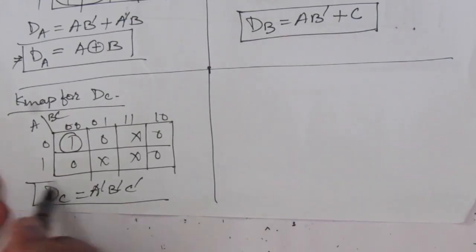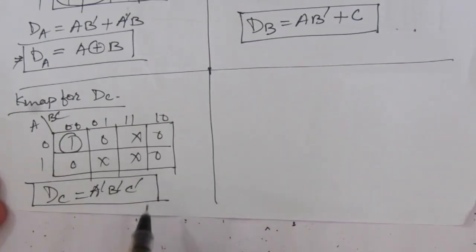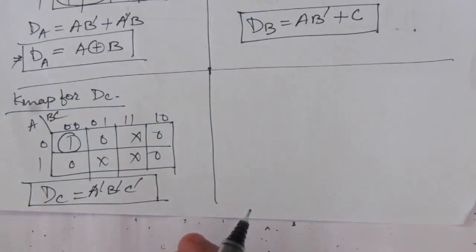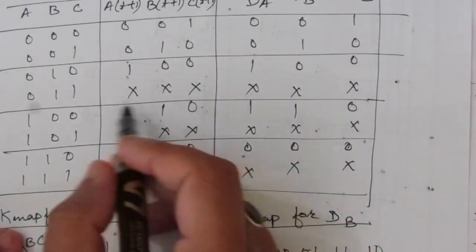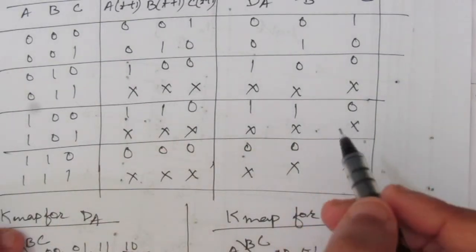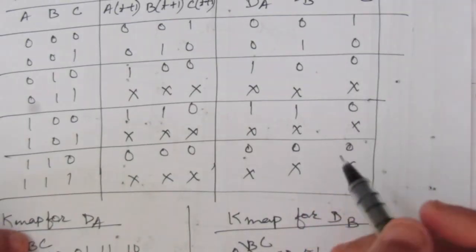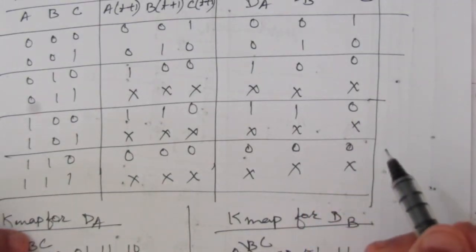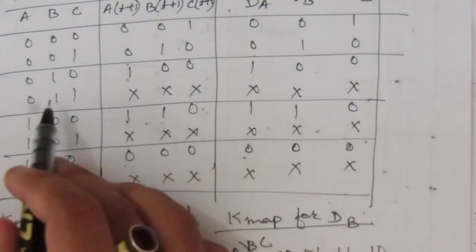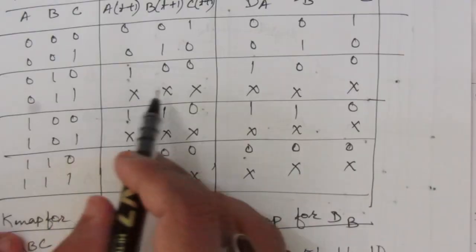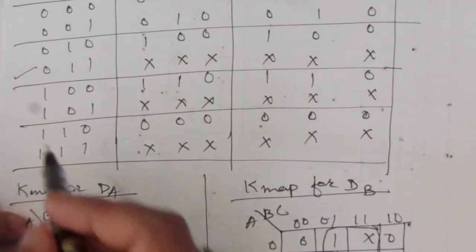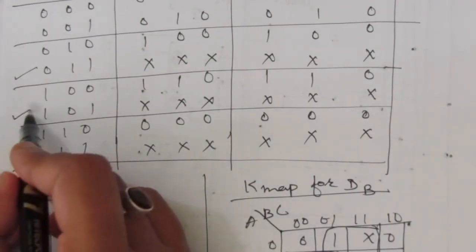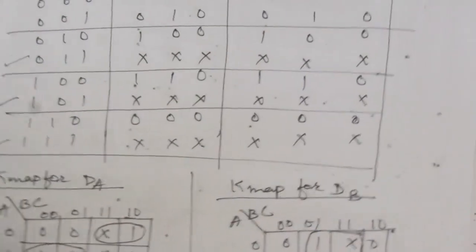So we have got the expressions for DA, DB, and DC. Before designing, let us check whether there is a lockout condition for the don't care conditions. If there is no lockout condition, then we can directly design this circuit. Now we will consider the unused states — state 3 (0,1,1), state 5 (1,0,1), and state 7 (1,1,1).